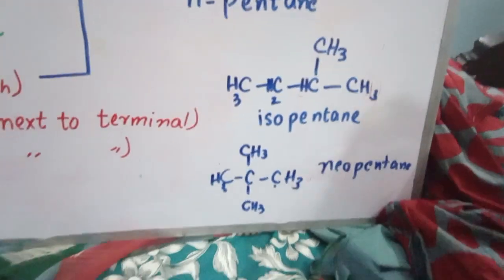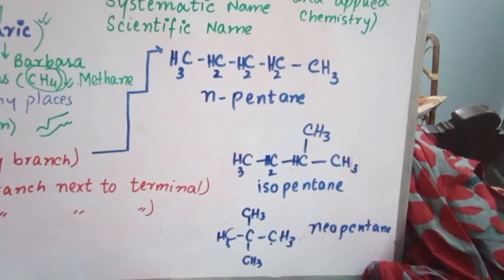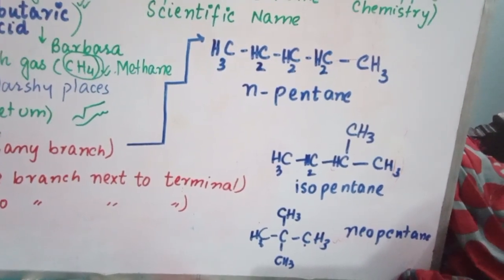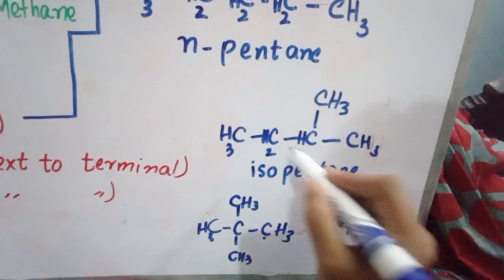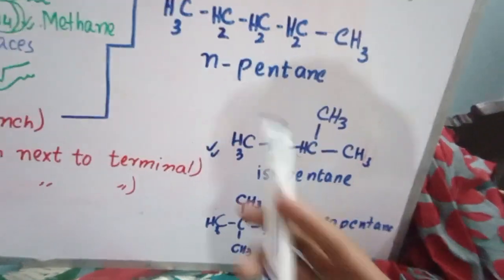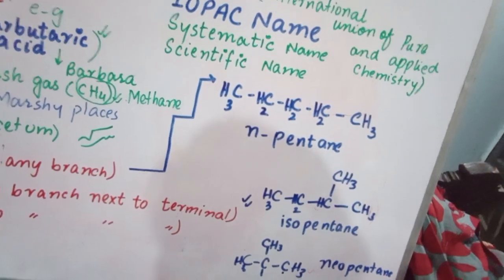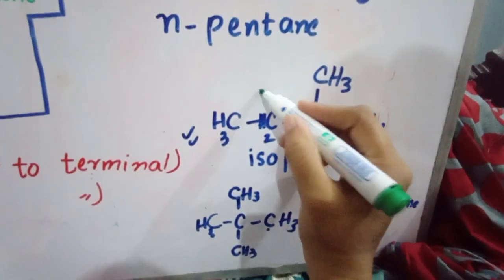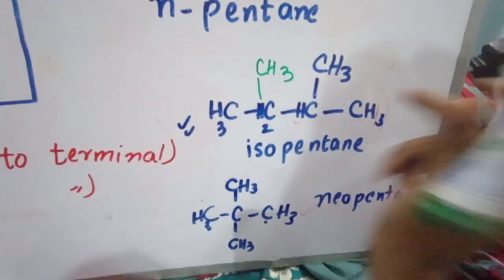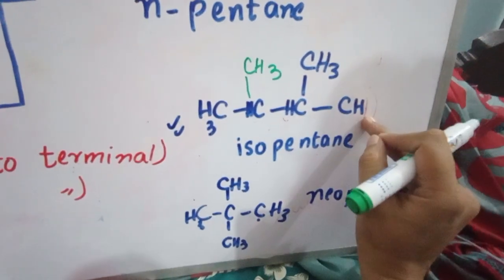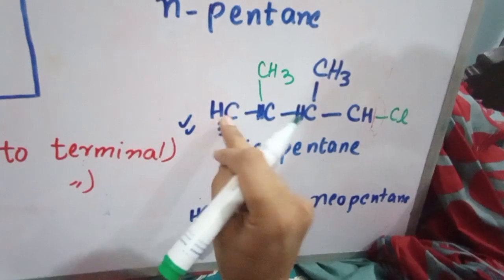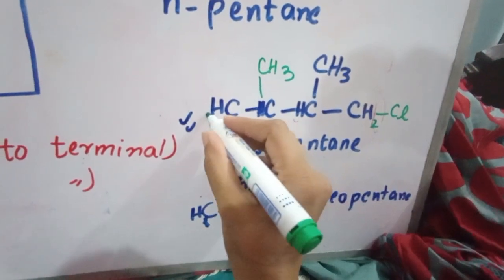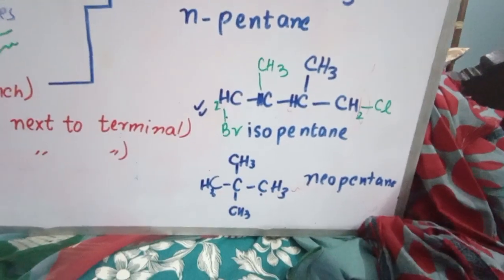Now, look at this clearly. These all are common names. Now, if I change the structure of this isopentane - I will draw 1 methyl more here and 1 chloride here, 1 bromide here. Now, what will be the name of this structure?